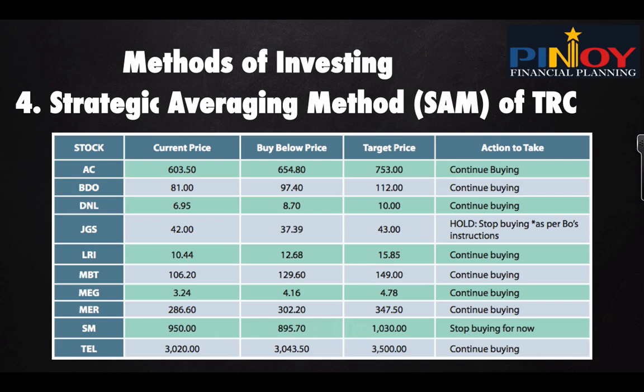For example, for AC (Ayala Corp), the current price is 603.50 and the buy-below price is 654 — so we continue buying. For BDO, same thing — buy-below is met, so we continue buying. You don't need to think too hard; just follow the SUM table. These are good companies, hand-picked as the best among the best to maximize returns.